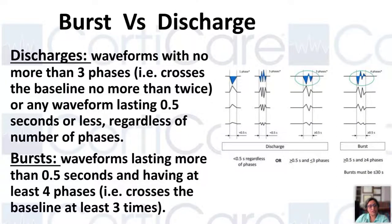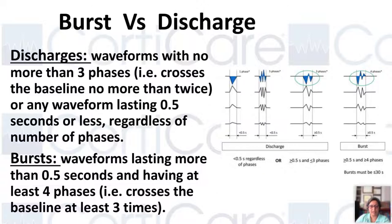Since we're talking about discharges, we should know the difference between a burst and a discharge. A discharge is a waveform that should not have more than three phases — it can have more than three phases if it is occurring for half a second or less. Anything longer than half a second, having at least four phases, and less than 30 seconds is a burst. Make sure you're using the correct term when you annotate the EEG, per ACNS terminology.